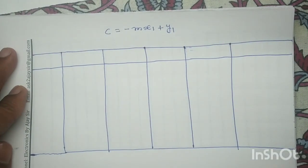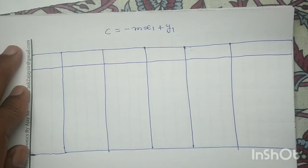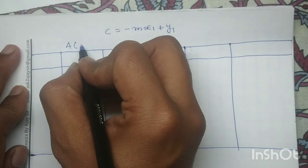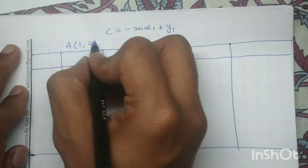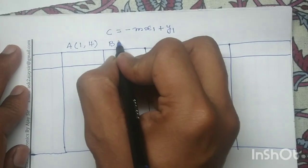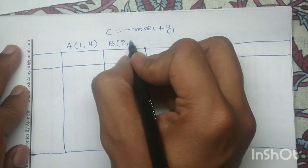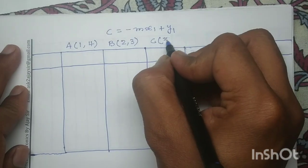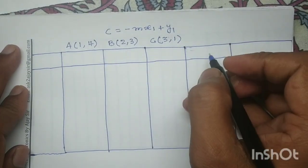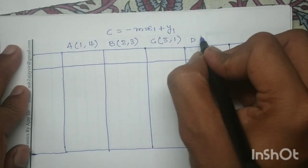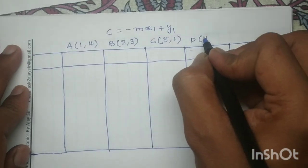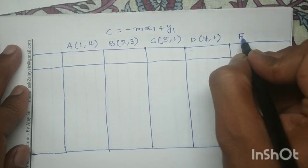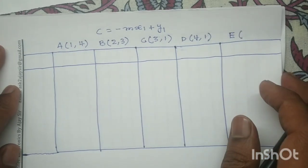5 points are given to us. We label them: point a is 1,4 — point b is 2,3 — point c is 3,1 — point d is 4,1 — and point e is 5,0.